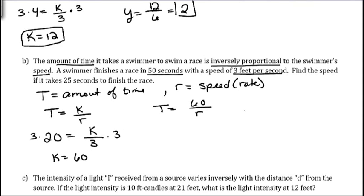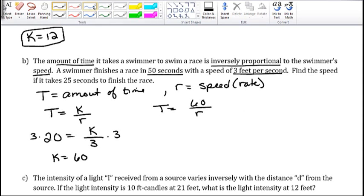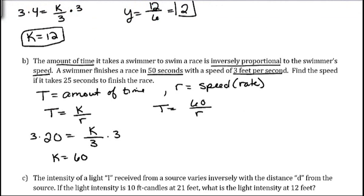So we have t is equal to 60 divided by r. And the last bit of information is going to tell us what we need to know to solve for either t or r. And we want to find the speed if it takes 25 seconds to finish the race. And so this time we're looking for r and we're given the time that it takes to finish. So 25 equals 60 divided by r.